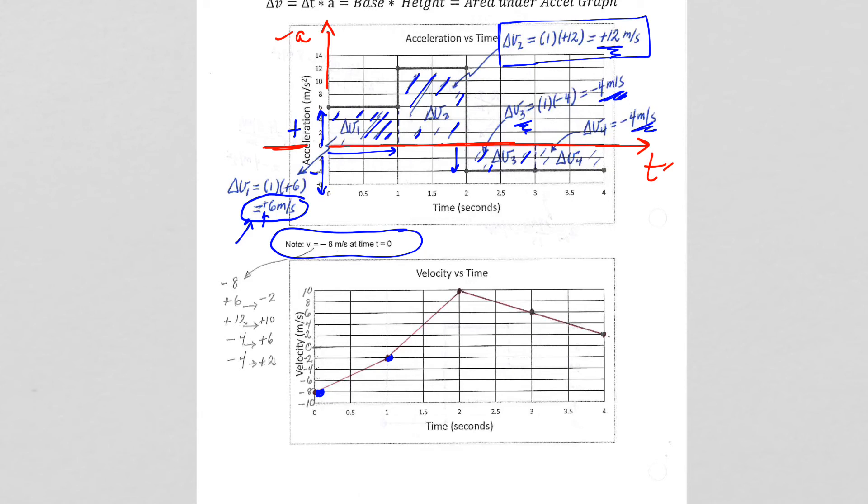So negative eight plus six is negative two. Negative two plus twelve goes up to positive ten. Connect the dot. And then I go down four. Connect the dot. And then down another four. Connect the dot. So there you have it.